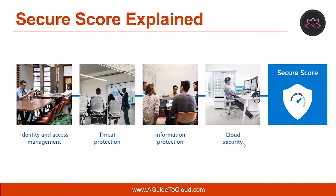Microsoft Secure Score is a measurement of an organization's security posture, with a higher number indicating more improvement actions taken. Following the Security Score recommendations can protect your organization from threats. From a centralized dashboard in Microsoft 365 Security Center, organizations can monitor and work on the security of their Microsoft 365 identities, data, apps, devices, and infrastructure.